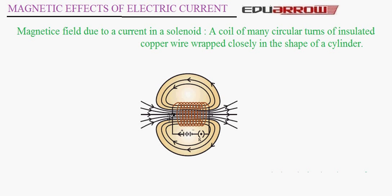If you recall, the pattern of magnetic fields in a solenoid is the same as that of a bar magnet, so a solenoid is a kind of bar magnet. One end behaves as the north pole — magnetic field lines start from this end — and the other end behaves as the south pole. You can see that magnetic field lines inside the solenoid are parallel, which means the magnetic field inside the solenoid is uniform.